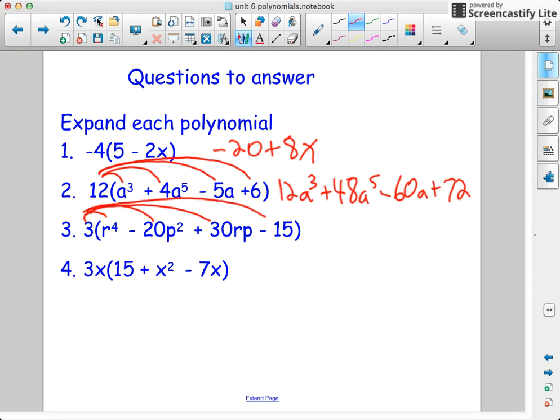For this one we're going to do this. So 3r to the exponent 4 minus 60p squared plus 90rp minus 45. And this one we're going to go over in the future of multiplying by a variable. So I won't go over that quite right now.